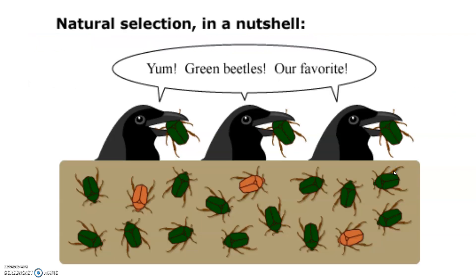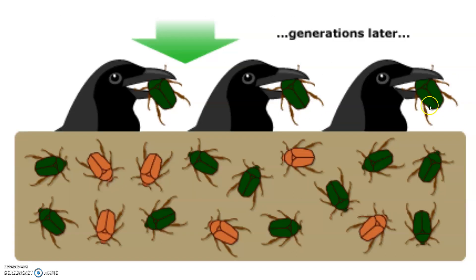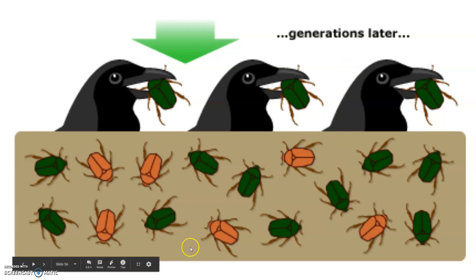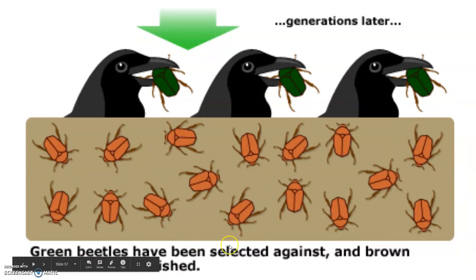As an example, consider green and brown beetles on a brown background. Green beetles stand out and get eaten up. If predators keep eating those green beetles, the only ones surviving are the brown beetles, and they get to pass on their genes. Generations later, we say the green beetles have been selected against — that's what natural selection is.